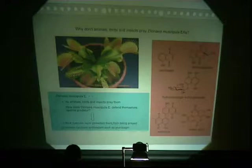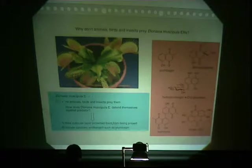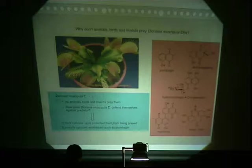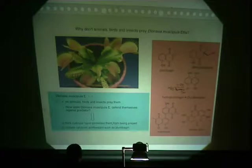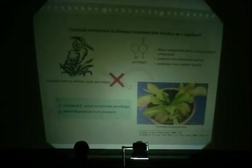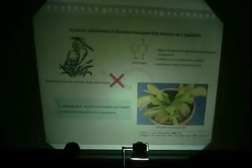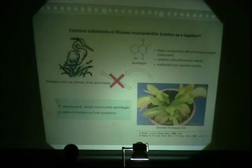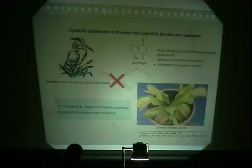Insects and worms didn't feed on Dionaea while they preyed on small insects or worms. How do they defend themselves against these predators? Probably the thick cuticular layer on the surface of the plant prevents them from being preyed upon. However, we saw that Dionaea also contains some poisonous compounds to prevent predation. Thus, Dionaea accumulates a great deal of plumbagin in the plant body, and plumbagin was reported to have anti-feedant and repellent activity.